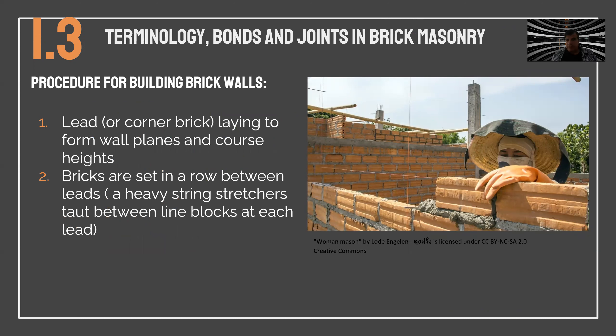In order to build a brick wall, you will need to lead the corners. Laying is formed in the wall planes and sometimes a line or string is used to help maintain the horizontality of the elements — set in a row between leads as heavy string stretchers. Because bricks have weight, you can lay several bricks — for example five, six, or seven — but then you must stop and wait for the mortar to dry a little before continuing.